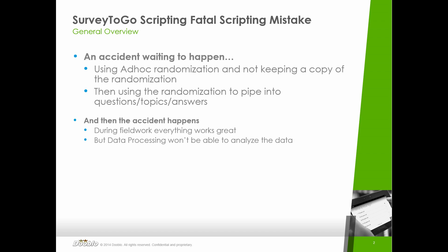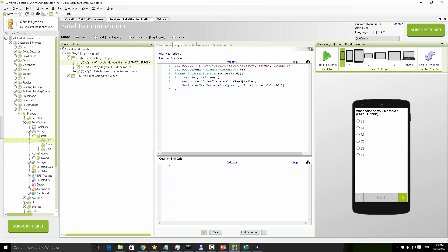Why did this happen? It's because we ran an ad-hoc randomization code and did not keep a copy of the randomization output. Then we used that randomization to pipe into both the answers and later the topics — but it could have been done in many different ways using piping or any other logic to use that not-saved randomization. The randomization logic done right here is the source of the problem — that's the accident waiting to happen — and this is the accident actually happening.